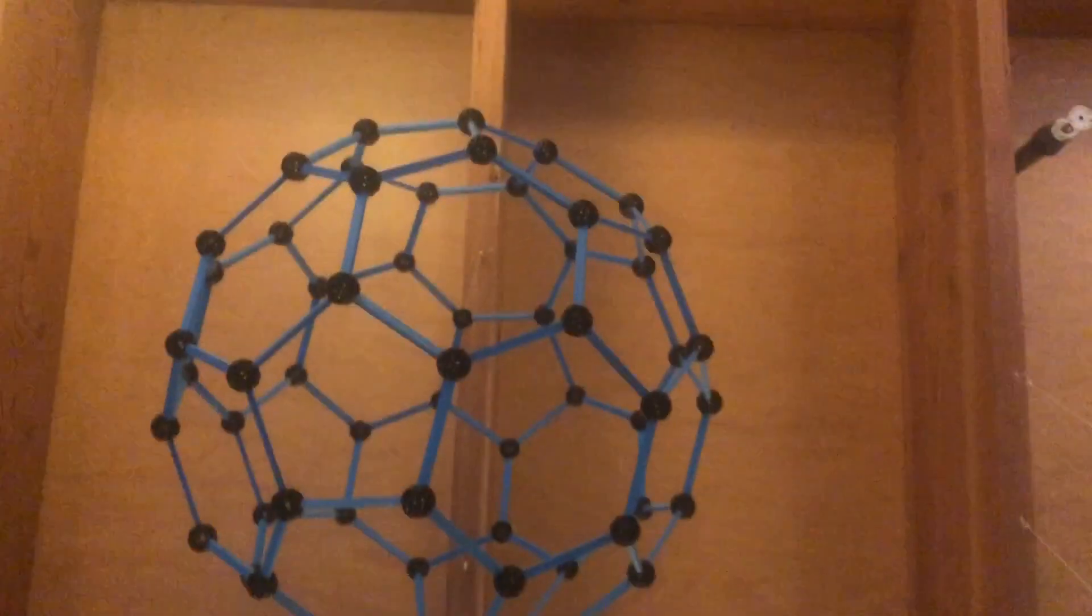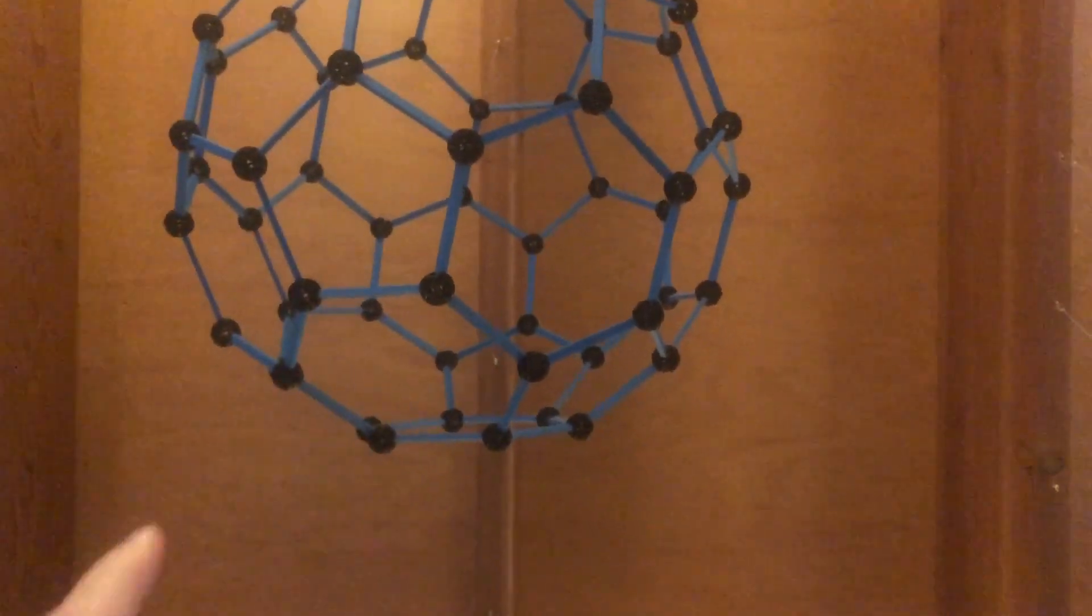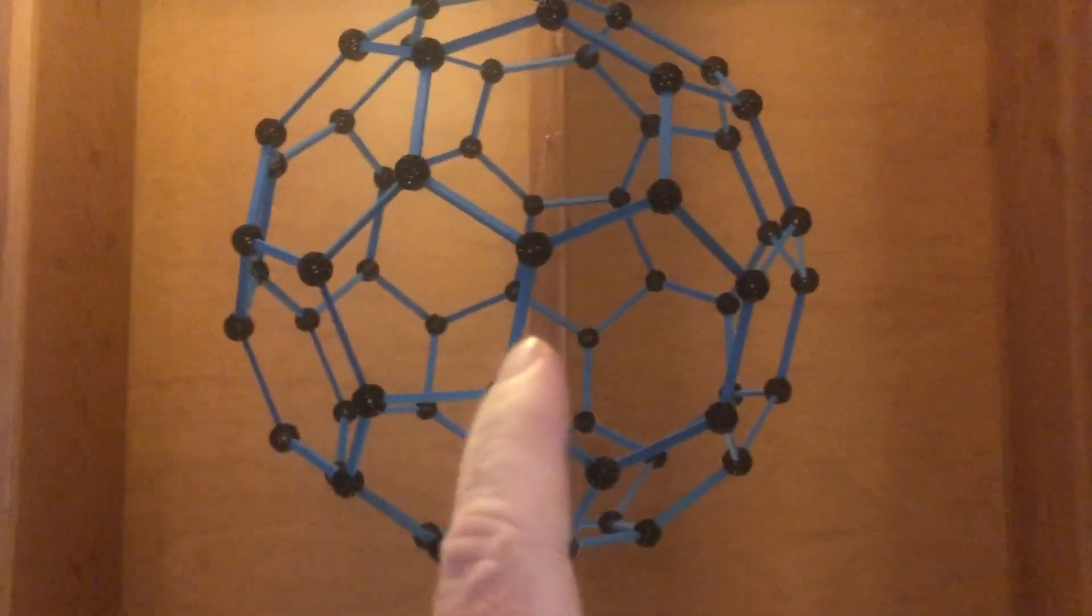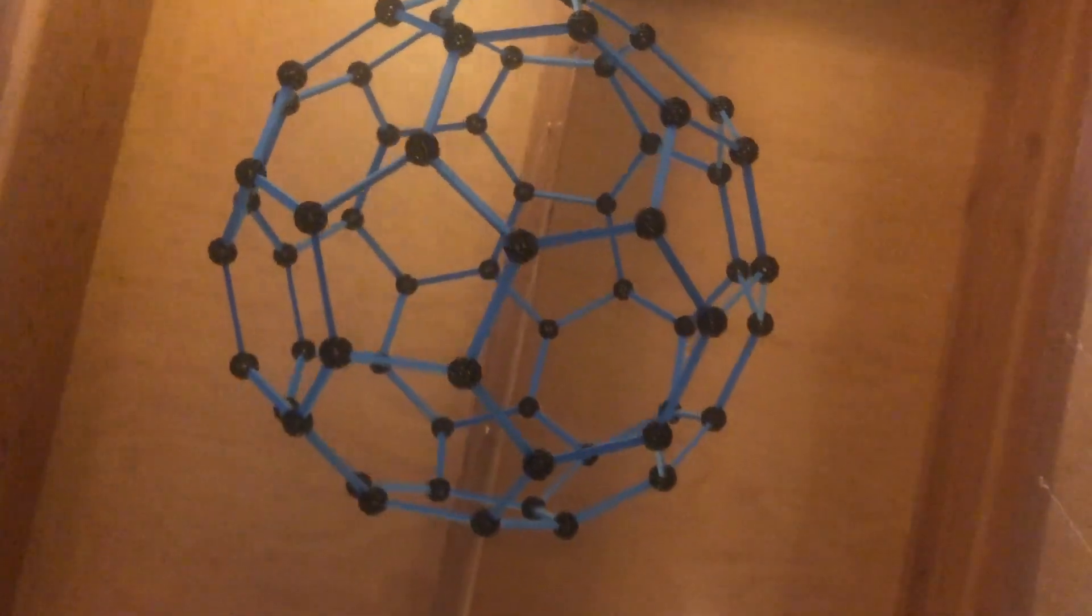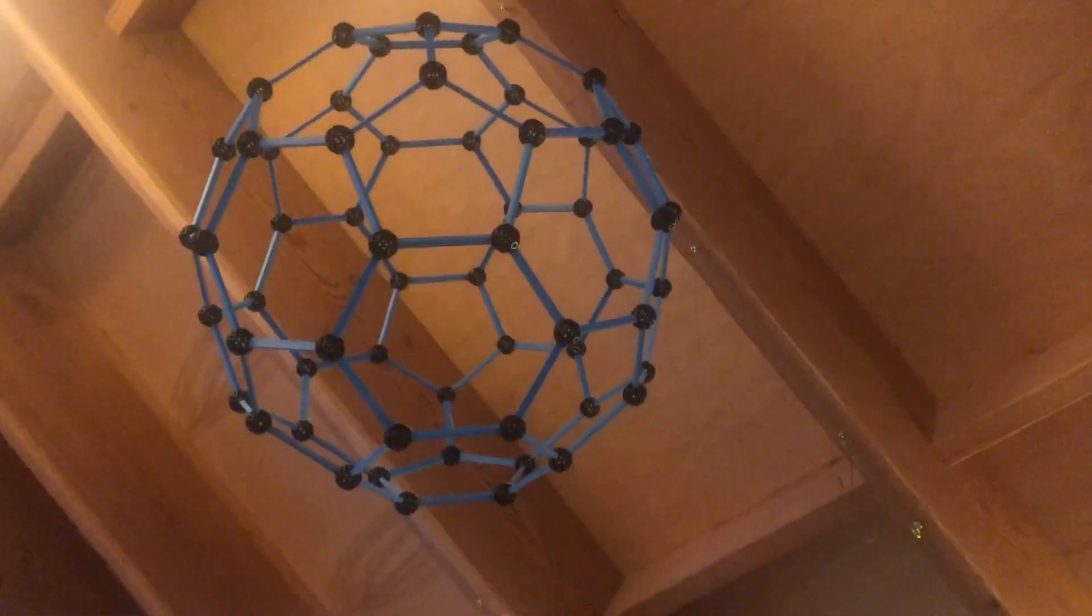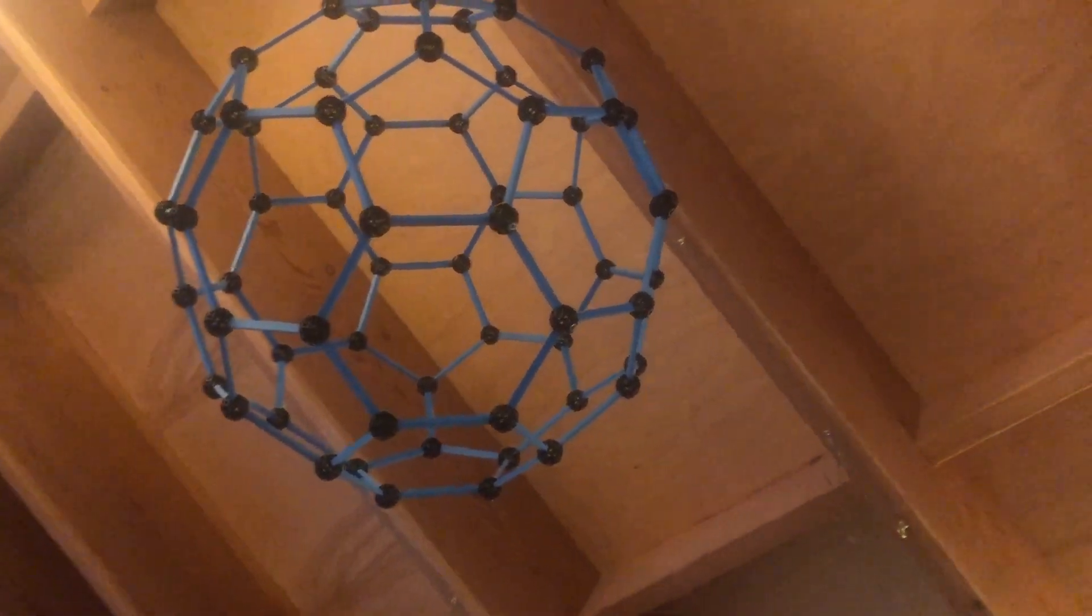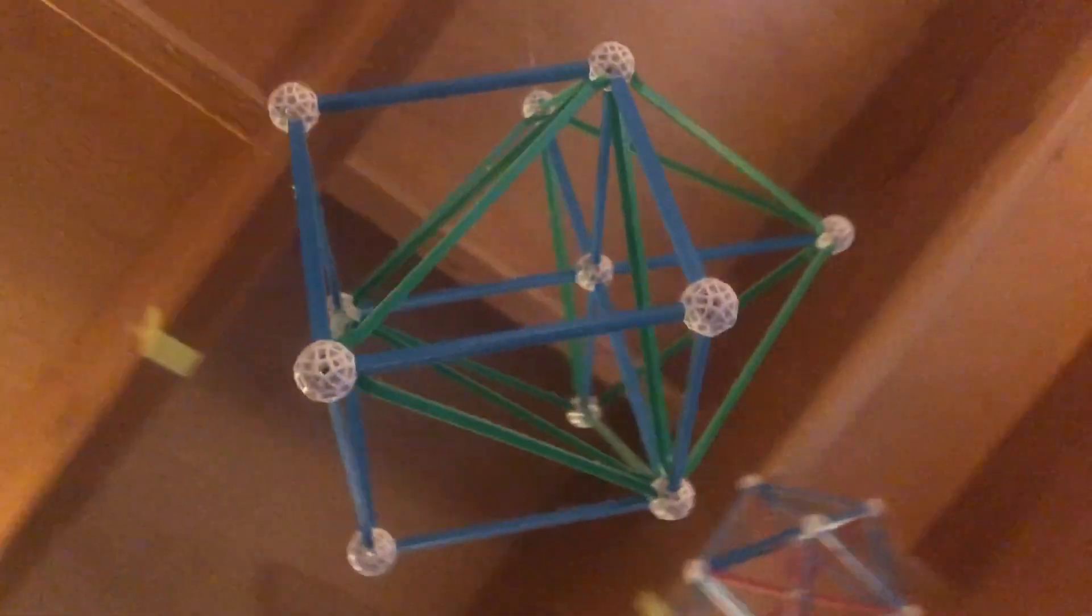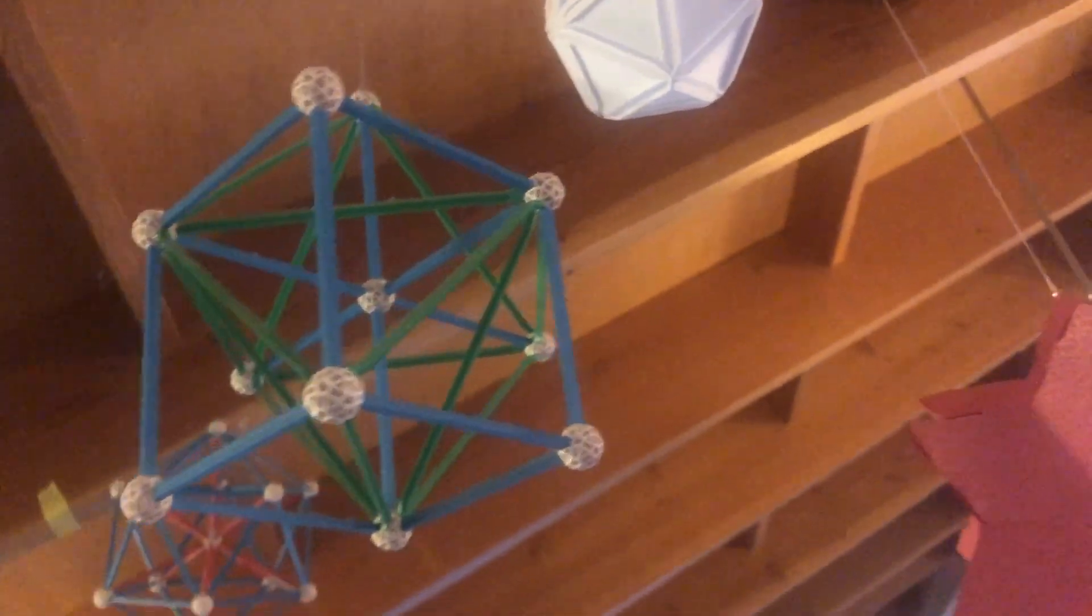This is a buckyball that I made with ZomeTools, a kit that allows me to make geodesic-type structures. A buckyball, of course, is a form of carbon. Those black hubs are carbon molecules. I can make other kinds of crystalline structures using ZomeTools.